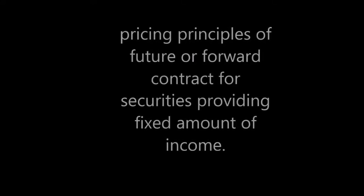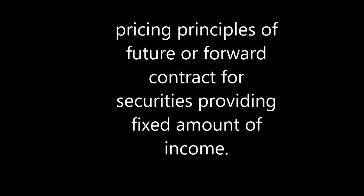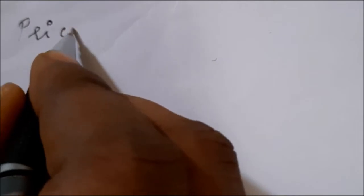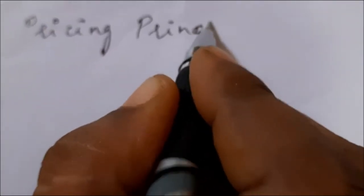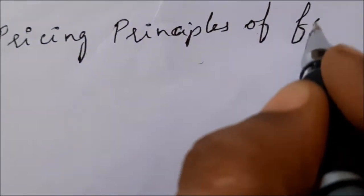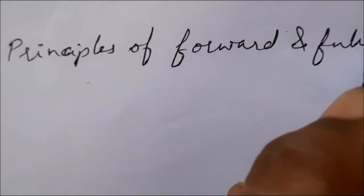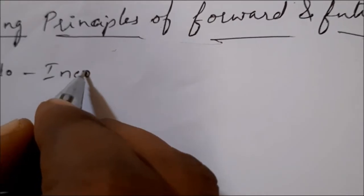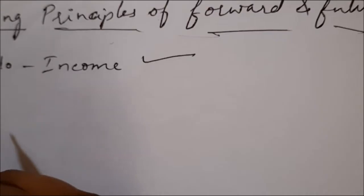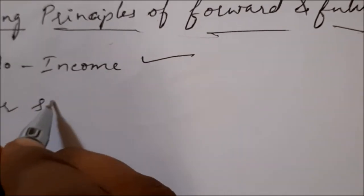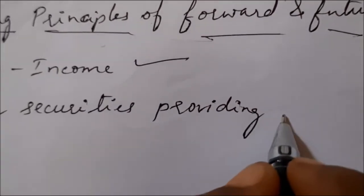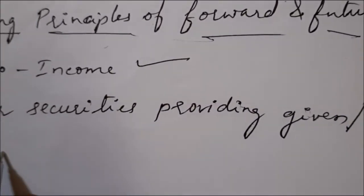Hello students. In this video we will calculate the future or forward contract price for securities providing a fixed amount of income. In the previous video we solved a problem on the first step of the pricing principle of forward and future. The first step was for securities providing no income, and in this video we will solve a problem on the second step, which is for securities providing a given or fixed amount of income.